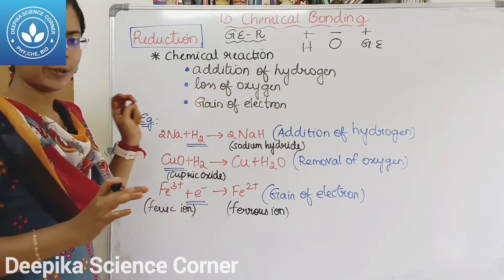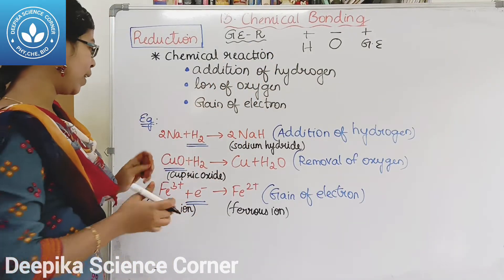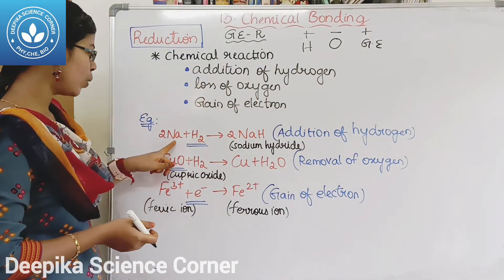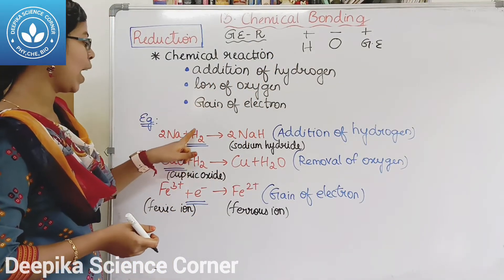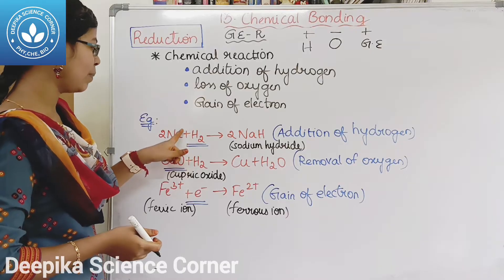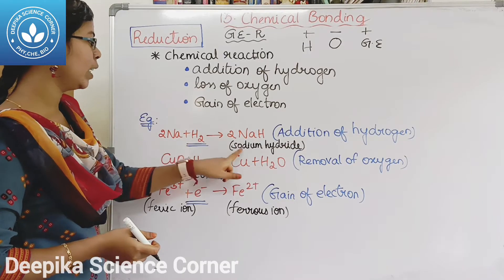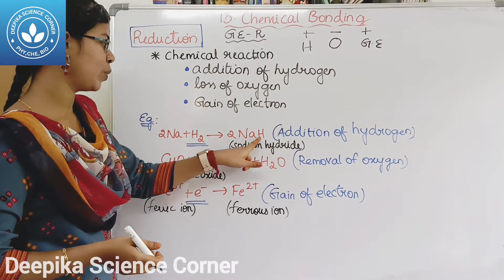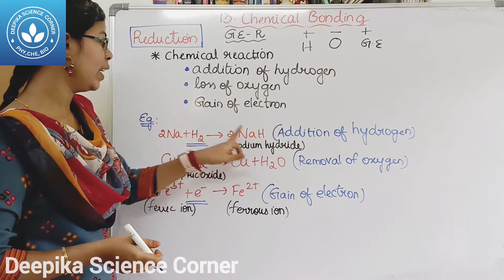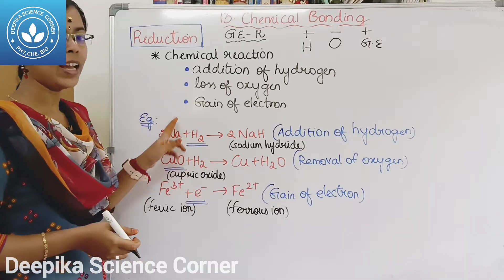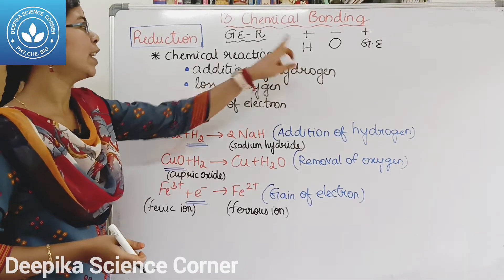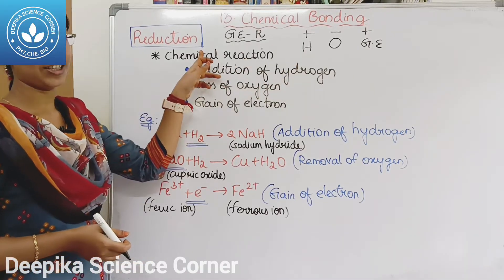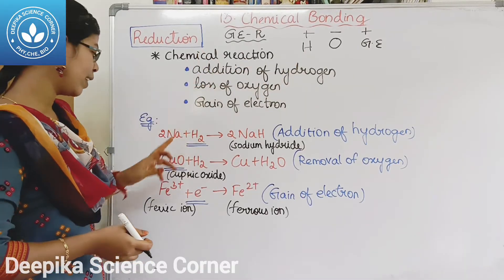Let's see one example. Sodium hydroxide, NaOH — hydrogen will be added. This is the reduction reaction.